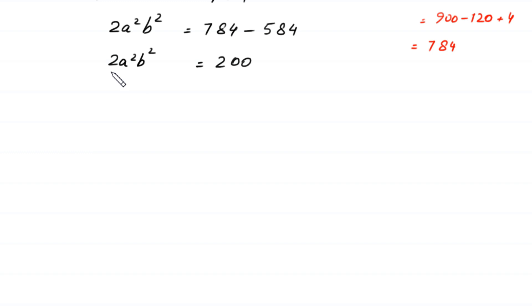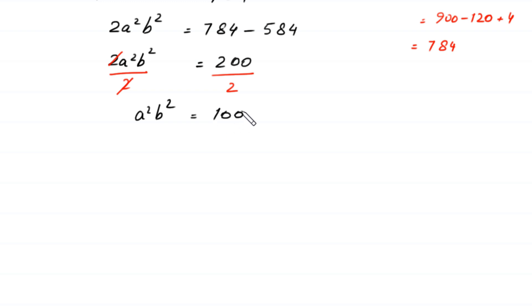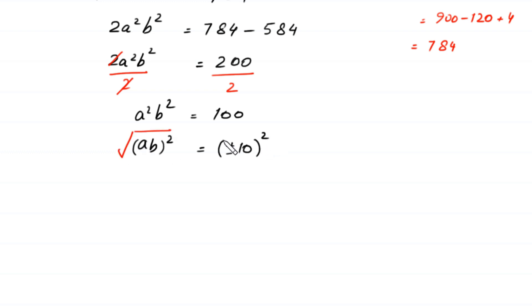We divide both sides by 2, so a²b² = 100. We can write a²b² as (ab)², so (ab)² = 100, which gives ab = ±10 after taking the square root of both sides.